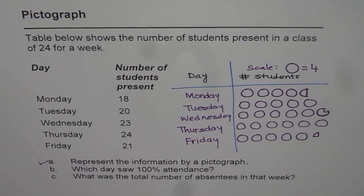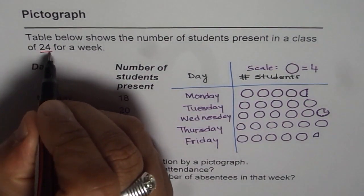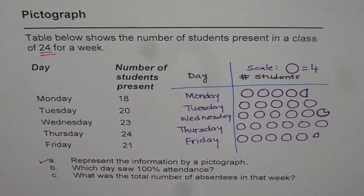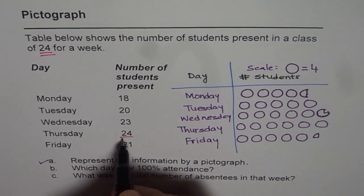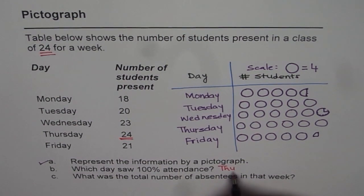Which day saw 100% attendance? Now what do you mean by 100%? We are given that the students present in the class are 24. 100% means the day when we have 24 students. So it is Thursday. On Thursday everybody is present.